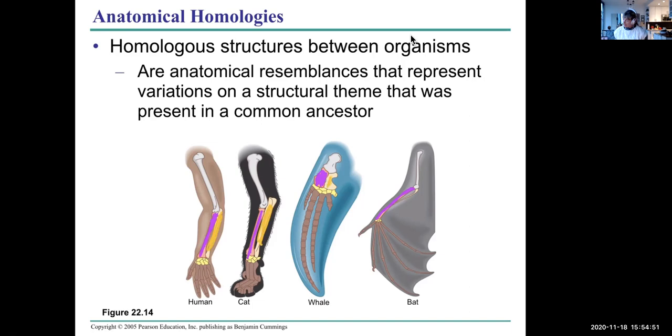And another one is the ulna. Again, in the whale, it's very small. It's very squat, but wide. And the bat, it's quite thin. So there's variation in that structure. Those are homologies, anatomical homologies.